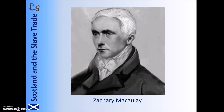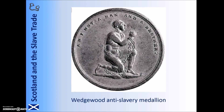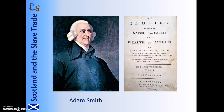One example of an abolitionist was Zachary Macaulay from Inveraray. He had worked in the Caribbean and saw for himself the evils of the trade. In 1823 he helped set up the Anti-Slavery Society and produced anti-slavery materials. Another campaigner was William Dixon from Moffat, who also worked in the Caribbean and on his return went on a tour of Scotland describing what he witnessed and urging an end to the trade. Dixon distributed examples of anti-slavery medallions, such as those made famous by abolitionist Josiah Wedgwood. Another man to speak against slavery was the Scottish economist Adam Smith, who in his book The Wealth of Nations argued that slavery was actually damaging Scotland and the world's economy, and so should be ended.